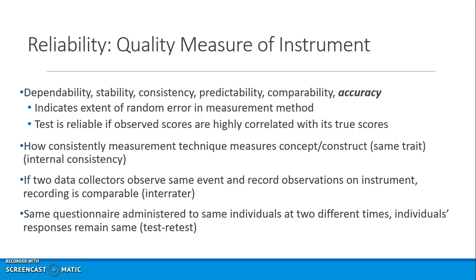If two data collectors observe the same event independently, don't communicate with one another, and record observations on an instrument such as a checklist, then a statistic is calculated — whether it be percent agreement, a kappa coefficient, a t-test, or a correlation — then you say that you've got inter-rater reliability.